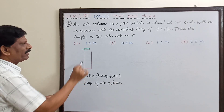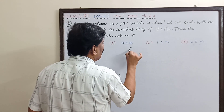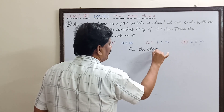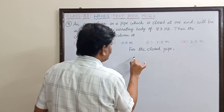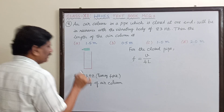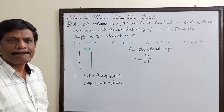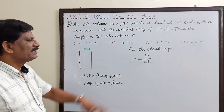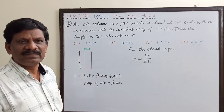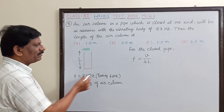For the air column in a closed pipe, the fundamental frequency is given by f equal to v divided by 4L, where L is the length of the air column inside the closed pipe. So the fundamental frequency equals the velocity of sound divided by 4 times the length of the air column. I am going to equate this f equal to 83 Hertz.